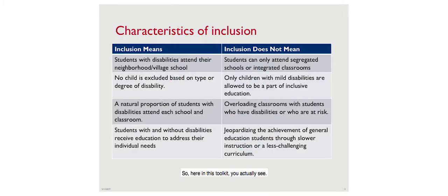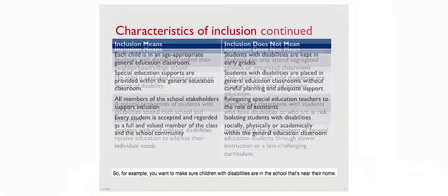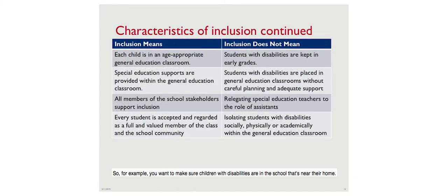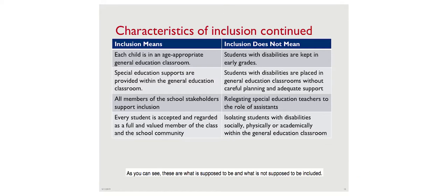In the toolkit you'll find different characteristics of what inclusion means. For example, children with disabilities should be in a school near their home, teachers should be trained to support these students, and students should be in age-appropriate classrooms. The toolkit lays out what is and isn't included in true inclusion.